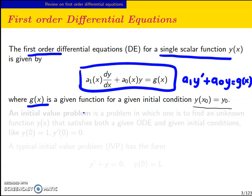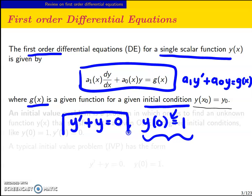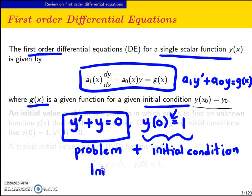What is the initial value problem? An initial value problem is a problem that satisfies both the ODE and conditions. For example, I can have a condition y' plus y equals to 0. These are my initial conditions. This is my first order differential equation. So if you have a problem plus initial conditions, you have an initial value problem.